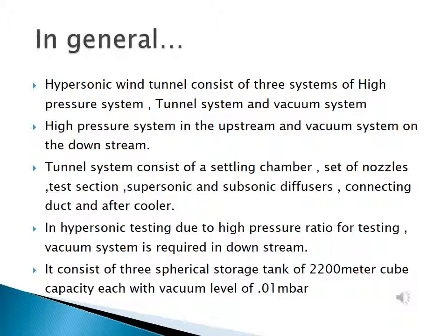A hypersonic wind tunnel consists of three systems: the high pressure system, the tunnel system, and the vacuum system. The high pressure system is upstream and the vacuum system is downstream. The tunnel system consists of a settling chamber, set of nozzles, test section, supersonic and subsonic diffusers, connecting duct, and after cooler. In hypersonic testing, due to the high pressure ratio required, a vacuum system is needed downstream. It consists of three spherical storage tanks of 2200 cubic meters capacity each, with a vacuum level of 0.01 bar.